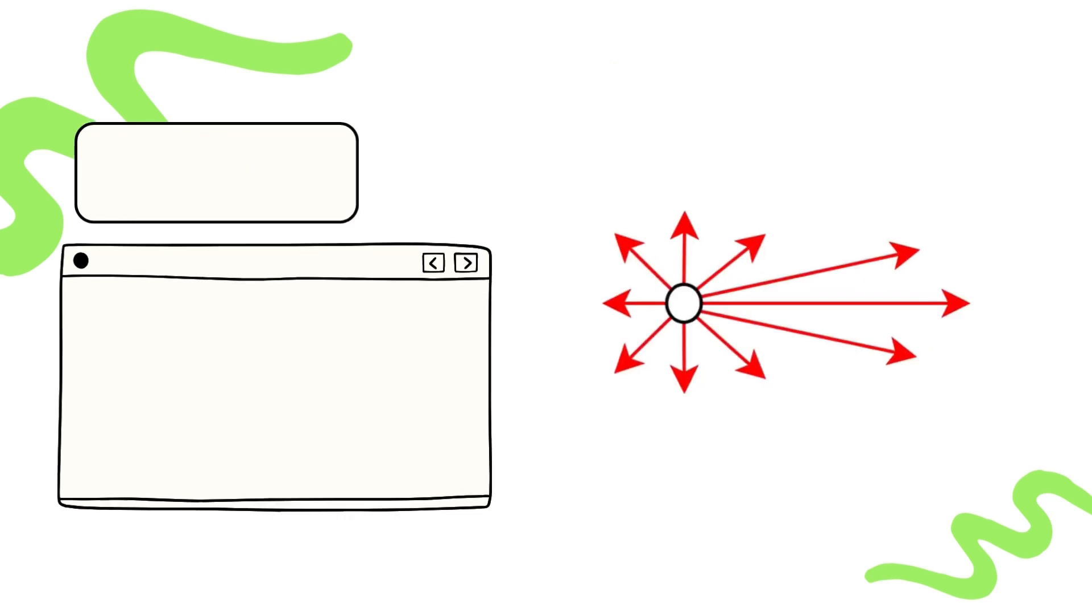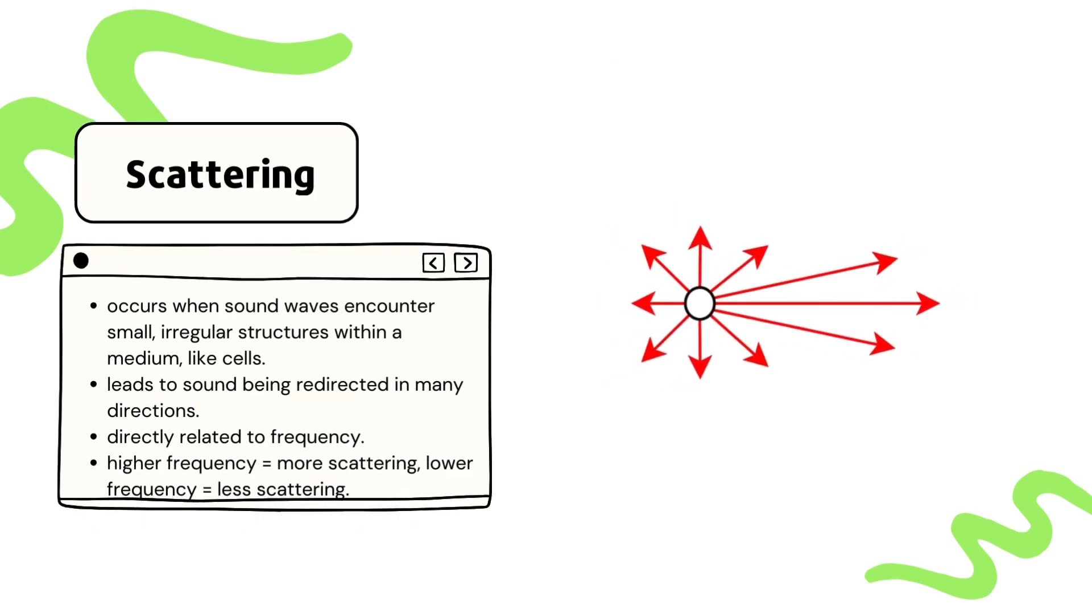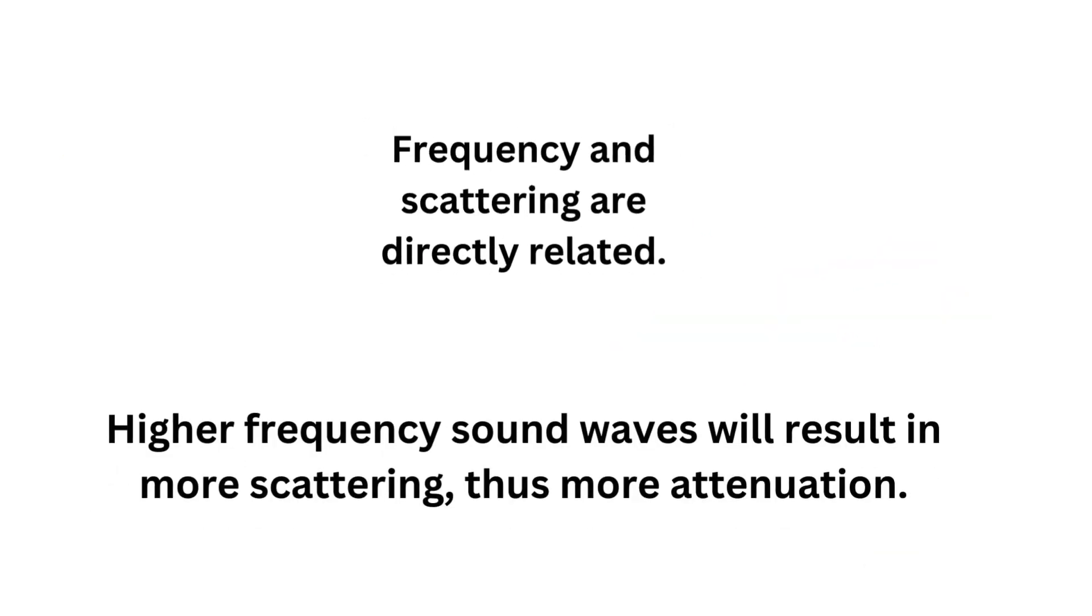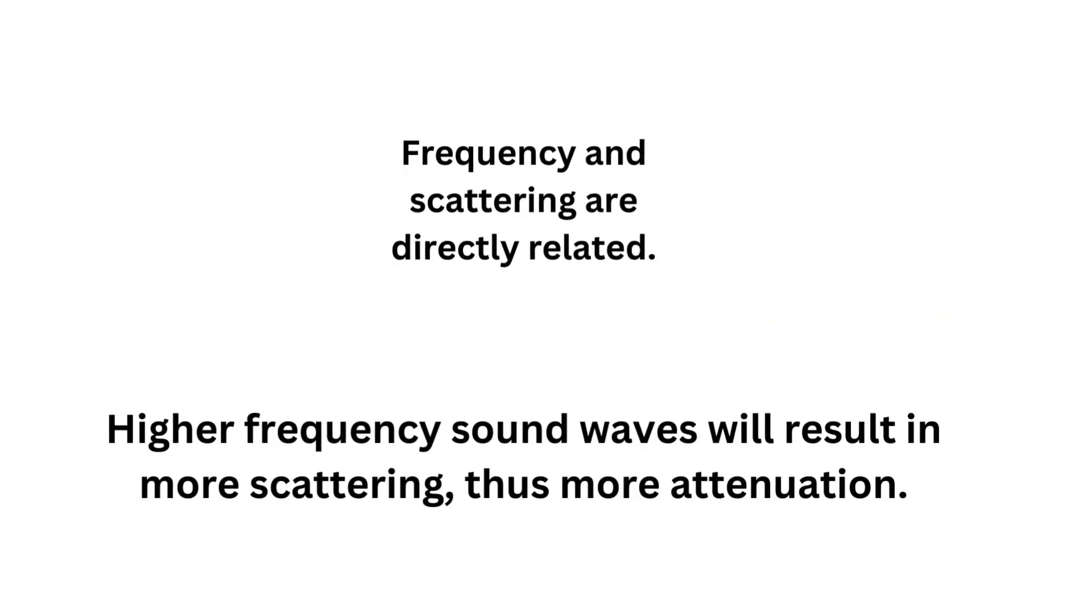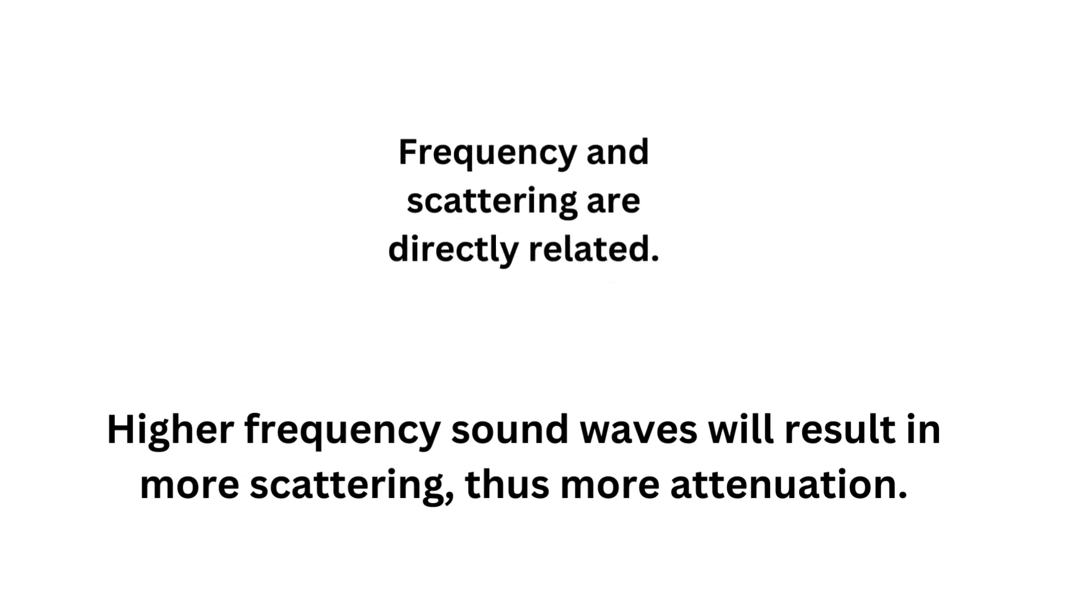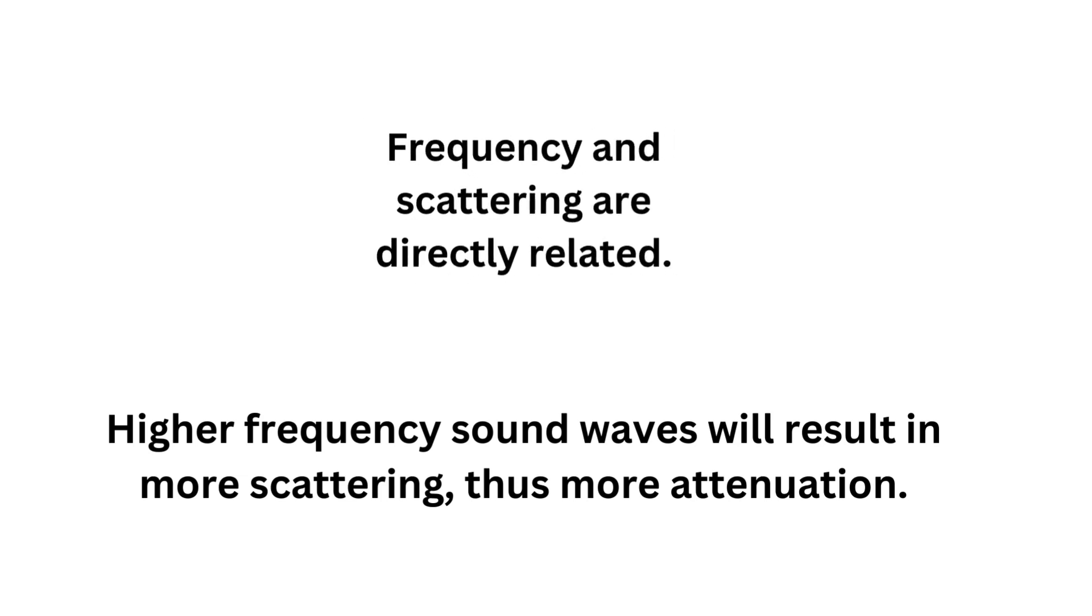Let's talk about the next factor that contributes to attenuation. Scattering occurs when sound waves encounter small, irregular structures within the medium, like cells or particles. With scattering, the sound will be redirected in various directions, all contributing to attenuation. Remember I said that higher frequencies experience more attenuation. Here's one reason why: higher frequency sound waves are more susceptible to scattering when compared to lower frequency waves. Therefore, frequency and scattering are directly related.